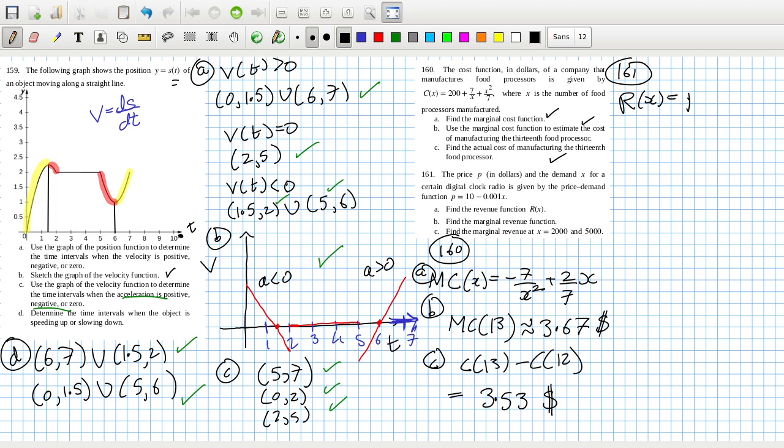So the revenue function is pq or px - price times demand quantity. So that would be 10x minus 0.001x². Part B: find the marginal revenue. That's the derivative: 10 minus 0.002x. Find the marginal revenue at 2,000 and at 5,000. Okay, 6 and 0.